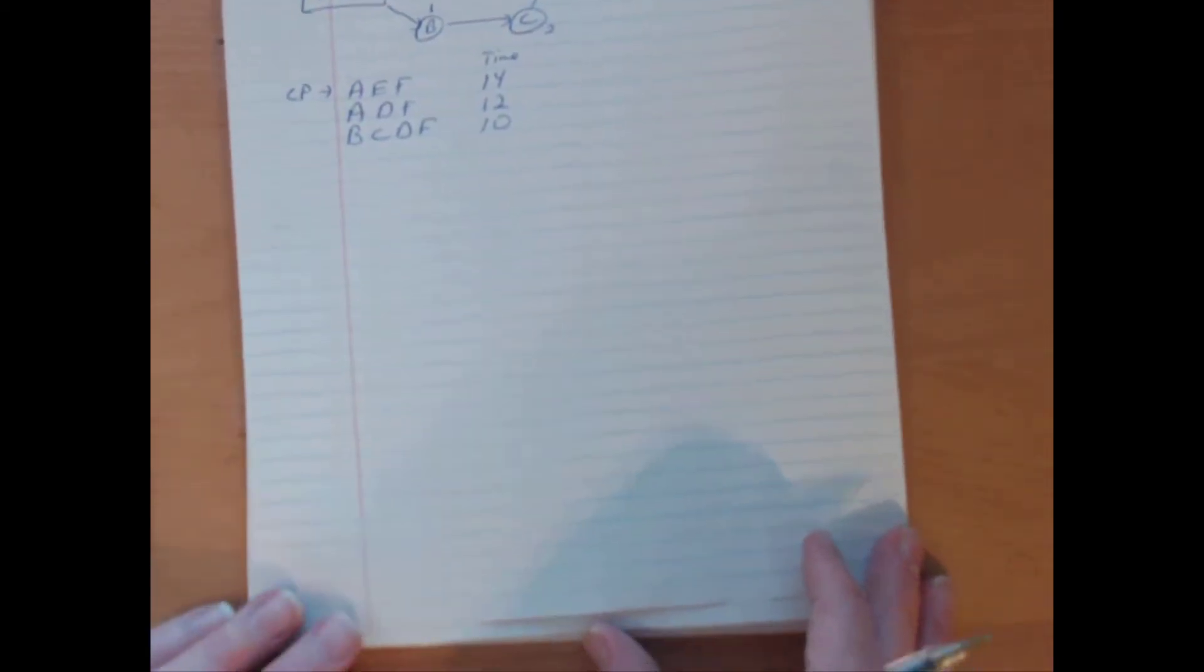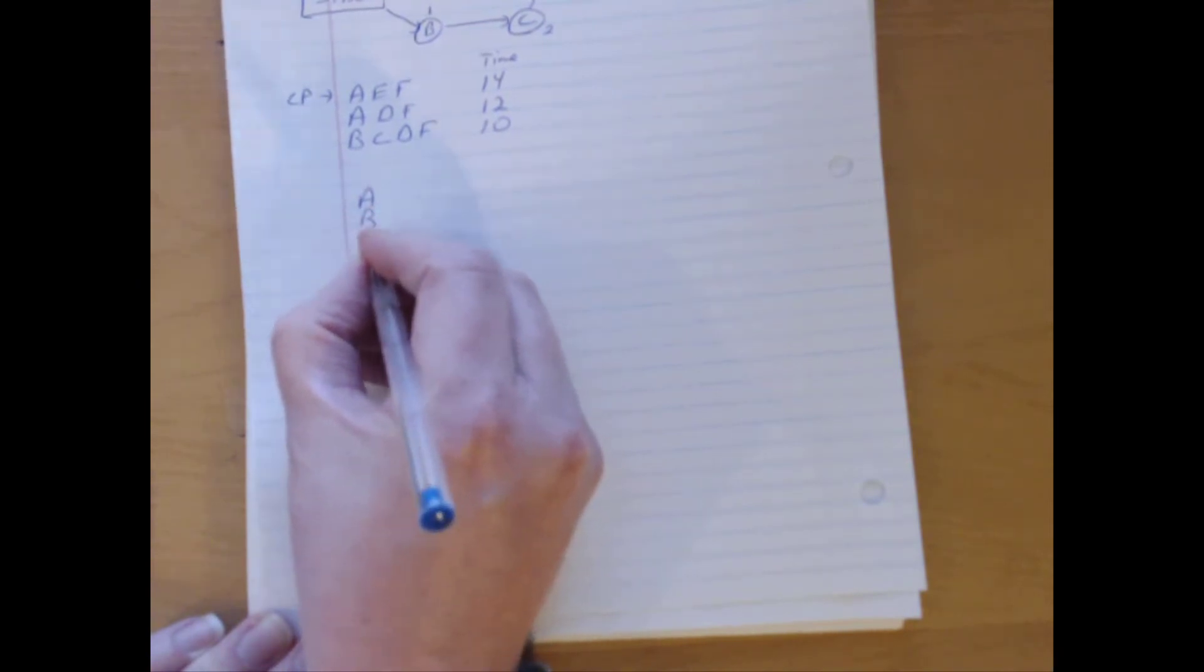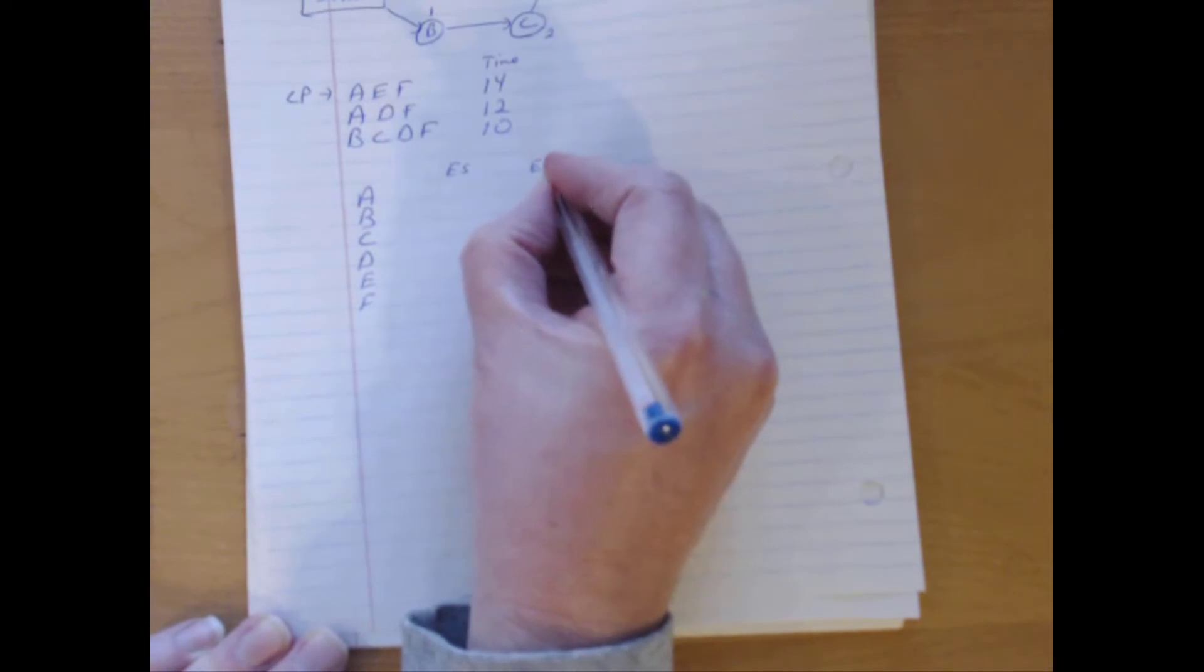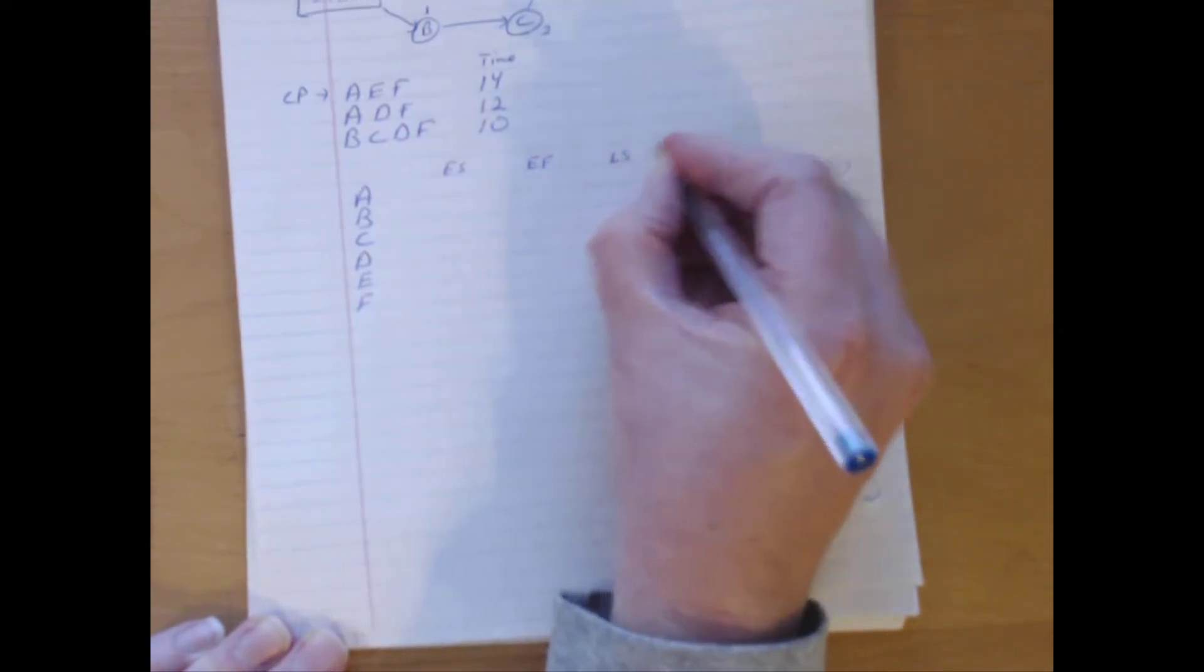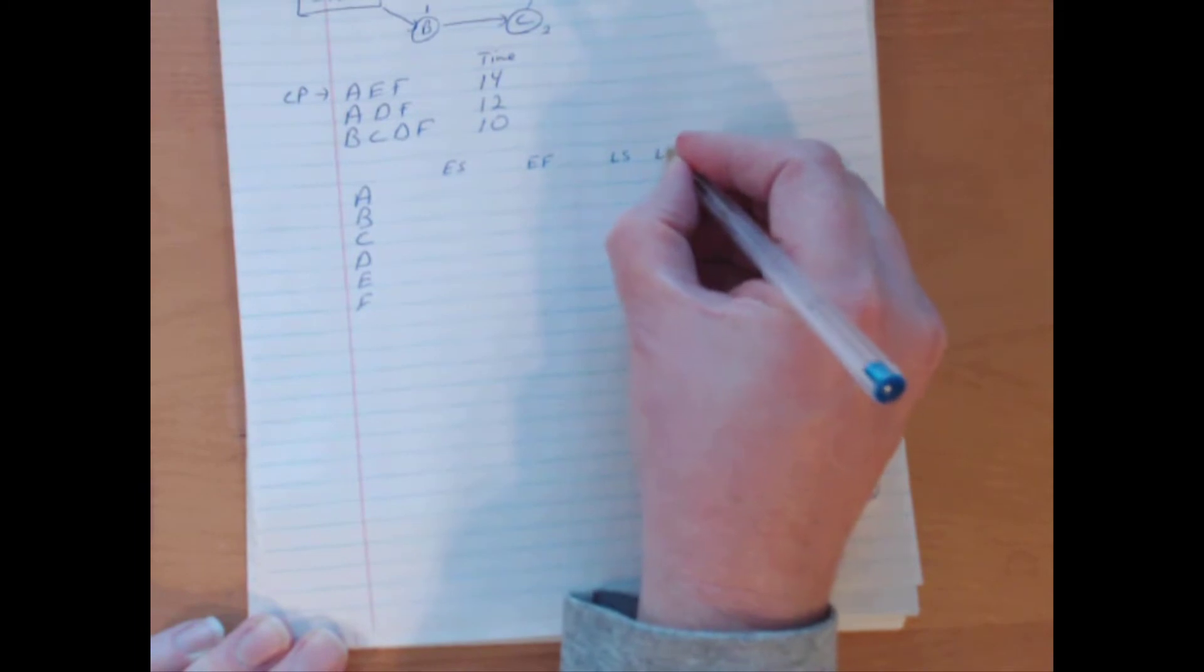Next kinds of things that we can sort of think about here is thinking about all those activities. So we have A, we have a B, C, D, E, and F. And each one of those activities has an early start time, has an early finish time, has a late start time, and has a late finish time, has an activity slack, and has a free slack.